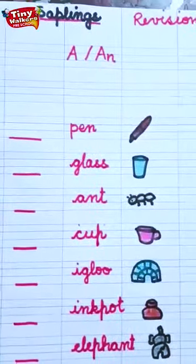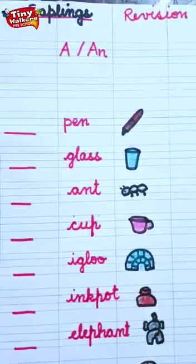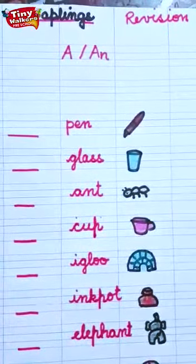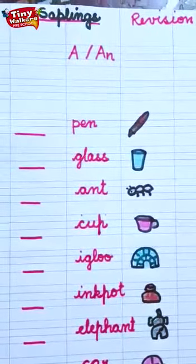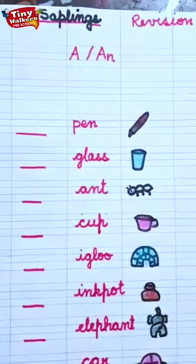Good morning, children. We are from Tiny Walker School. Today we will do revision of A or An. So children, can you tell me where we use A or An?